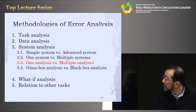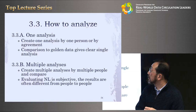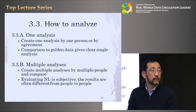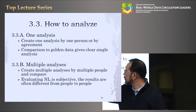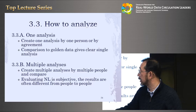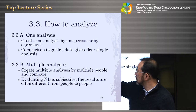The next axis is one analysis versus multiple analyses. One analysis is created by one person or by agreement — most reports have one single table listing errors, which is nice and easy to understand. Sometimes they have golden data: the correct answer, the missed answer, and the system output are compared. By no means does this always create multiple analyses — so by these methods, one analysis is created.